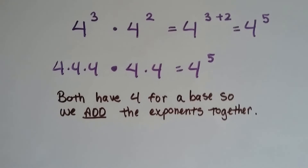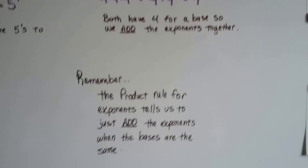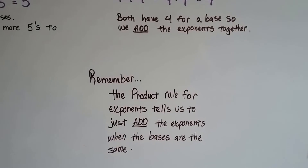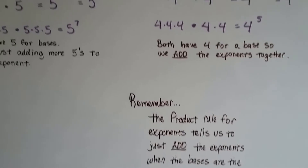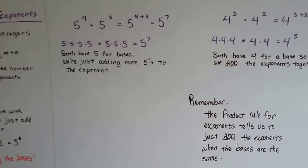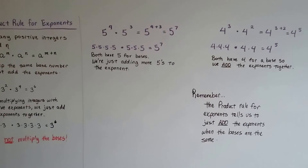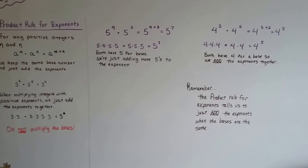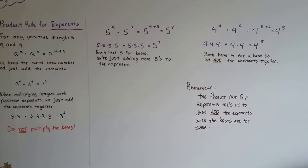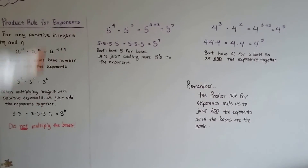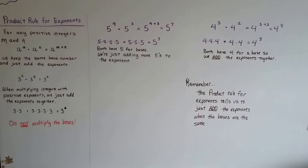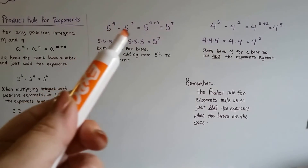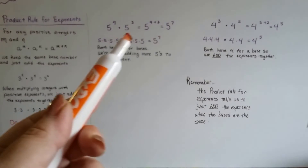Both have 4 for the base, so we just add the exponents. The product rule for exponents tells us to just add the exponents when the bases are the same. It's rightly named the product rule because that's the answer in multiplication — it's a product. So this is for multiplying exponents, but you have to remember it's only when the bases are the same. Both of these bases are the same.